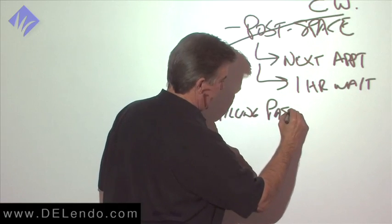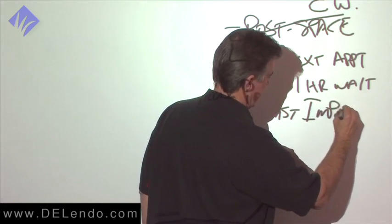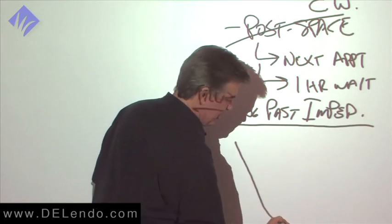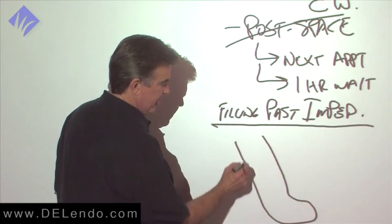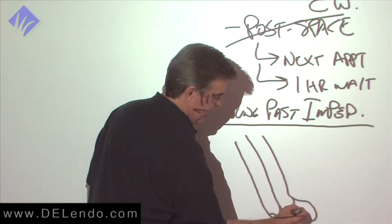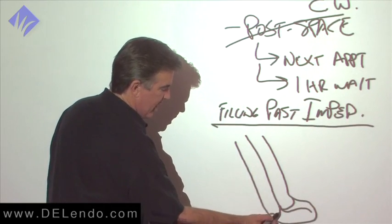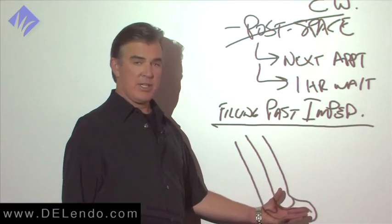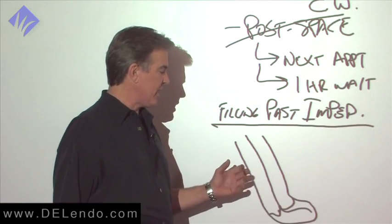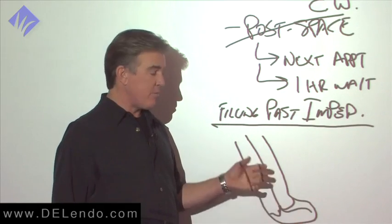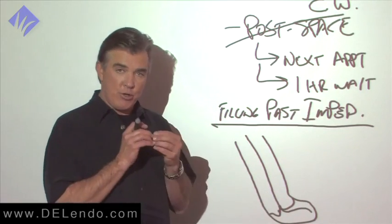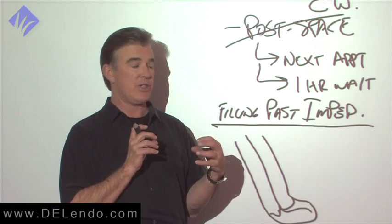One application of carrier-based obturation that is superior to all other filling techniques that I've ever used is filling past impediments. Most impediments occur in the last millimeter. On occasion you'll have something like this. I had a case like this. And the file wants to stop right here, but you know that you have millimeters, literally millimeters of canal space beyond the impediment. In the case I'm talking about, you've probably seen it in my lecture, I was able to shape the whole canal with bent files, but I could never get a gutta-percha cone fit past there.